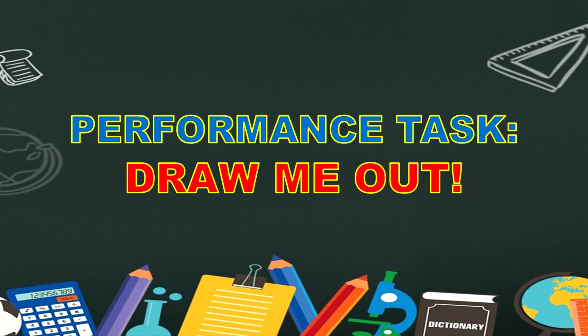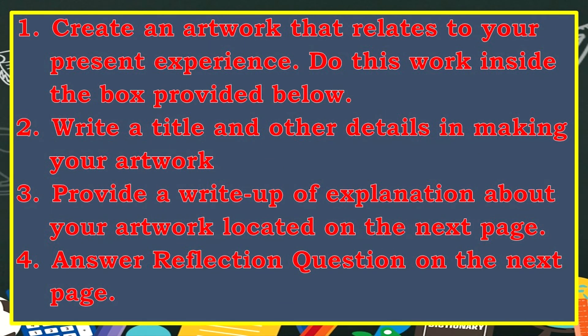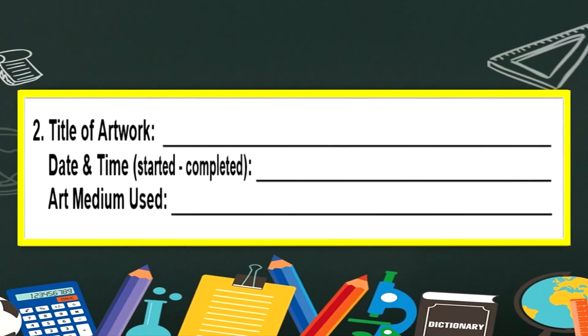Now we'll proceed to your performance task — Draw Me Out! Create an artwork that relates to your present experience. Do this work inside the box provided below. Write a title and other details in making your artwork. Provide a write-up of explanation about your artwork on the next page. Answer reflection questions on the next page. Include: title of artwork, date and time started and completed, and art medium used.